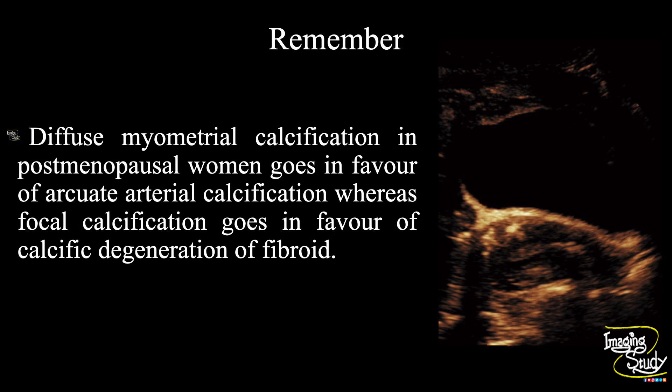Now, the take-home message. Diffuse myometrial calcification in postmenopausal women goes in favor of arcuate arterial calcification, whereas focal calcification goes in favor of calcific degeneration of a fibroid.